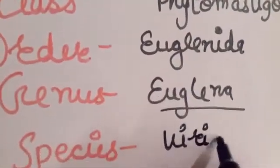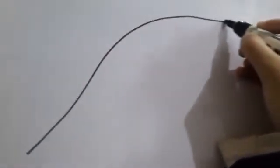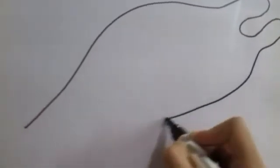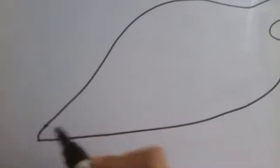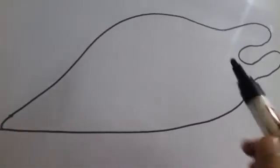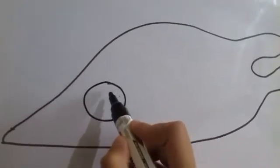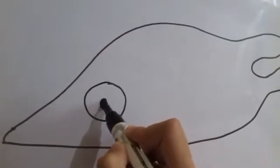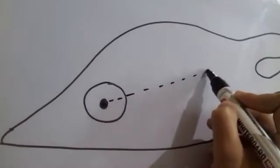So this was the classification. Now we are going to draw a diagram of Euglena viridis. It is simply a leaf-like structure. First of all, we need to make an outline that is the pellicle of Euglena. Right now I am making a rough diagram, but you need to make it very clearly. This is just a simple way to explain these parts and how you can draw it.